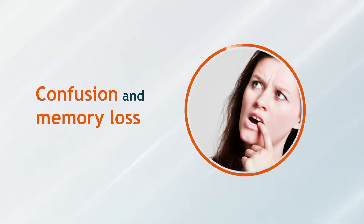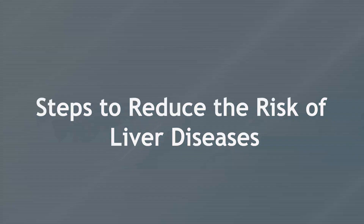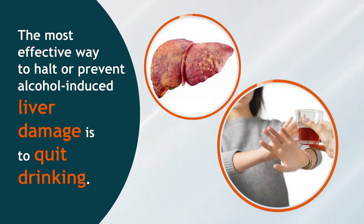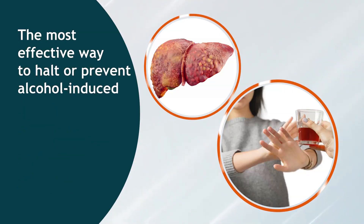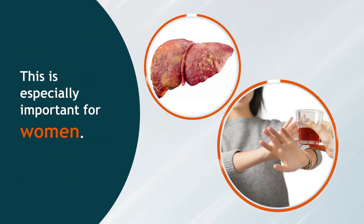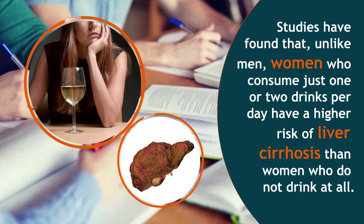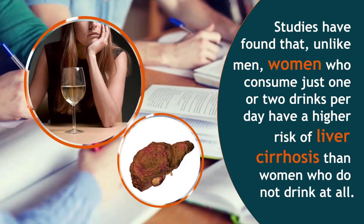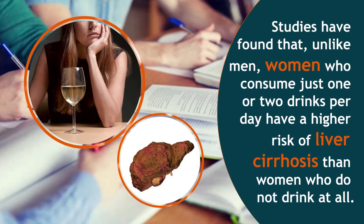Additional symptoms include internal bleeding, confusion, and memory loss. Steps to reduce the risk of liver disease: the most effective way to halt or prevent alcohol-induced liver damage is to quit drinking. This is especially important for women, as studies have found that unlike men, women who consume just one or two drinks per day have a higher risk of liver cirrhosis than women who do not drink at all.